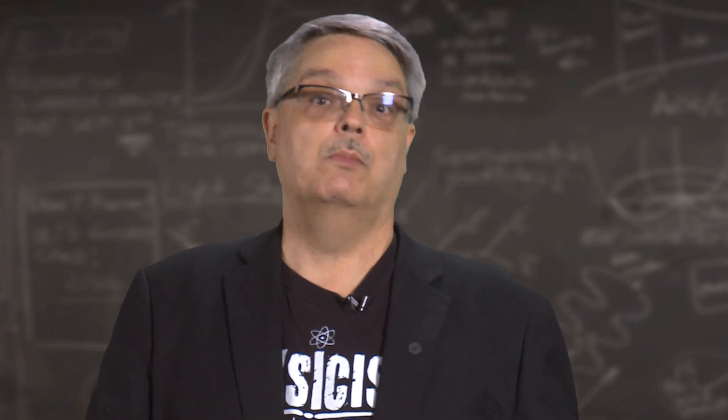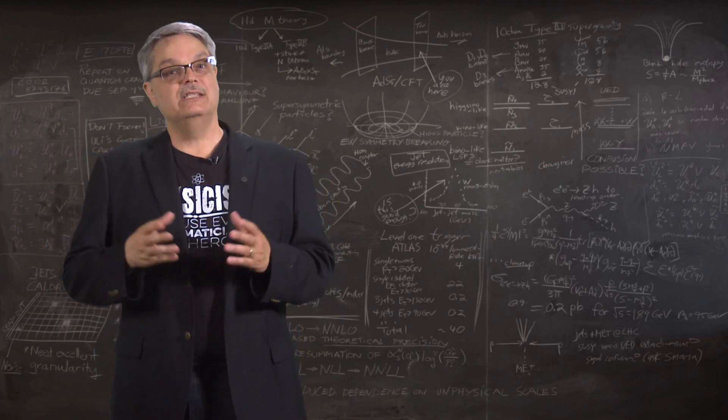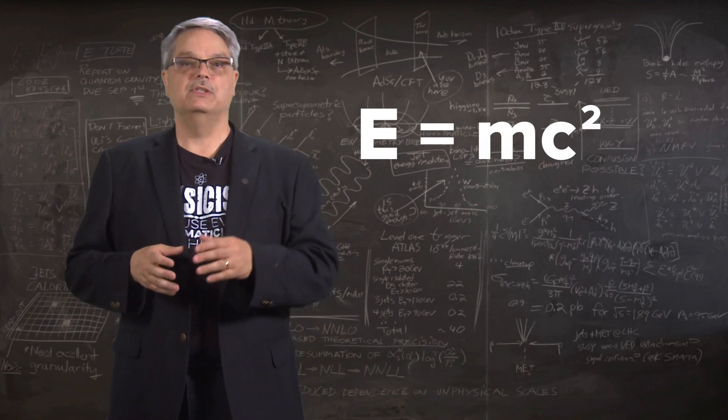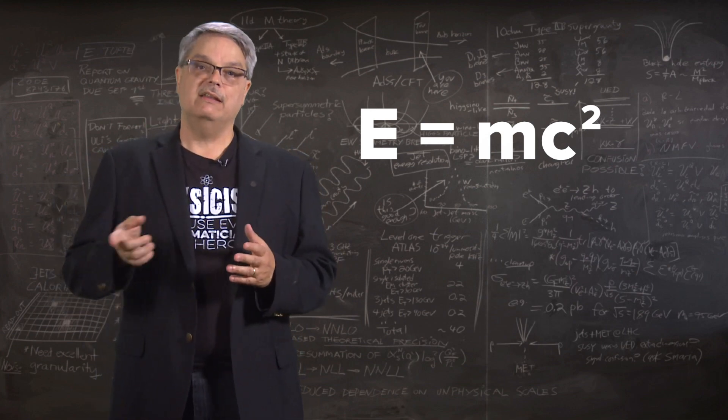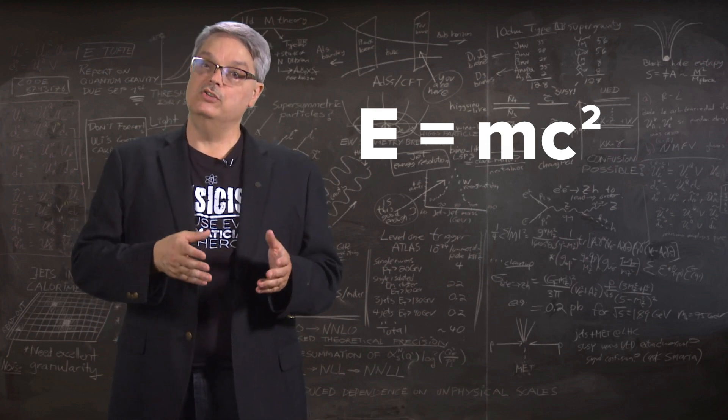So now we get to the point. The best particle accelerators have both high energy and high luminosity, but sometimes you have to make a compromise and pick one or the other. So what are the benefits of the two? Well, the easiest to understand is energy. You've no doubt heard about Einstein's equation, E equals mc squared. Basically, that equation says that energy and mass are equivalent and that you can convert energy into mass.